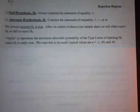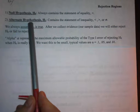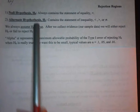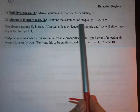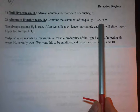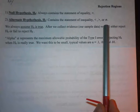In a hypothesis test, we always have two hypotheses: the null hypothesis and the alternative hypothesis. Remember, the null hypothesis always contains a statement of equality, and the alternative hypothesis always contains a statement of inequality, with a less than, greater than, or not equal.